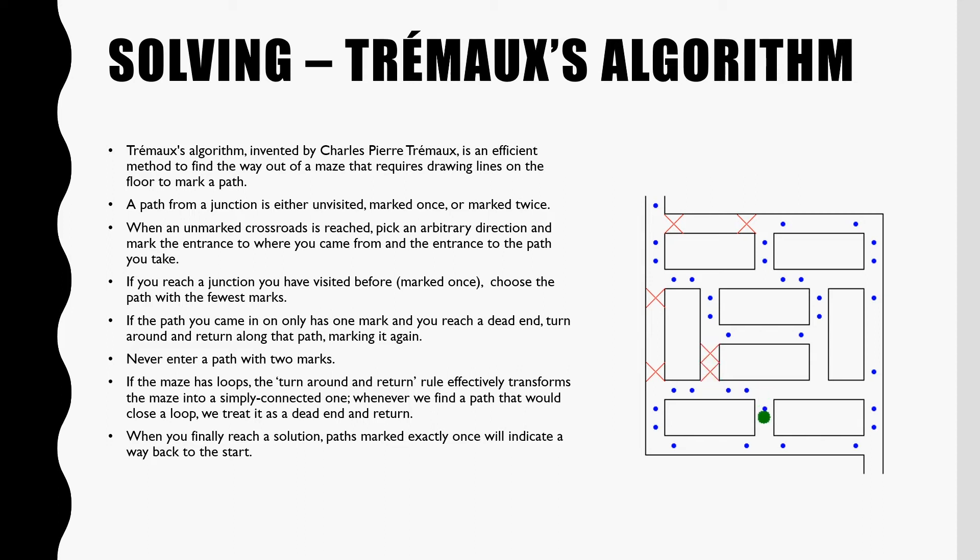A path from an intersection is either unvisited, marked once, or marked twice. When an unmarked crossroads is reached, pick a random direction and mark the entrance to where you came from and the path you take.